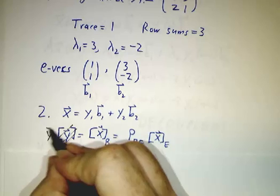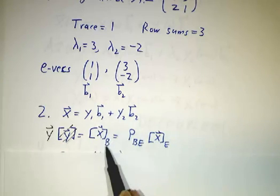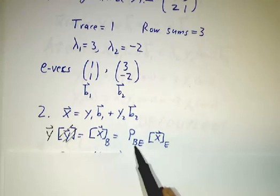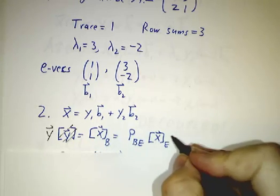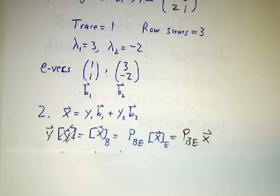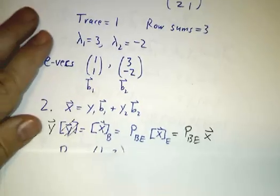And, sorry, y is x in the B basis, and you get that by taking x in the E basis and converting over, which is to say, x itself, and you convert over. So, y is PBE x.